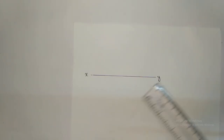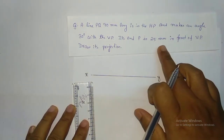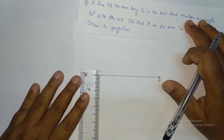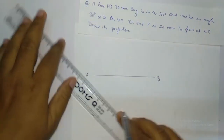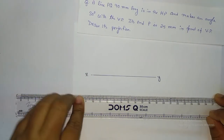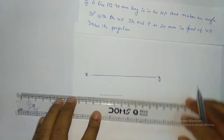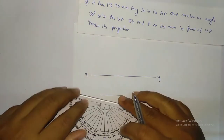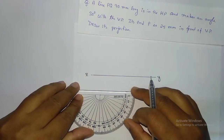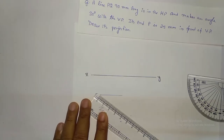Now I am going to draw the projection. First of all, you have to draw the reference line XY of any length. It is given that end P is 25 mm in front of the VP, meaning end P will start 25 mm below XY. So from here you can draw a line. Now you have to measure with the protractor where your 30 degrees is, because it is 30 degrees inclined with the VP. So here this is the 30 degrees, and this is going to be your top view.